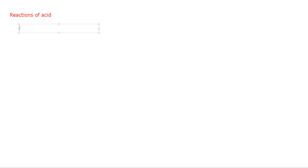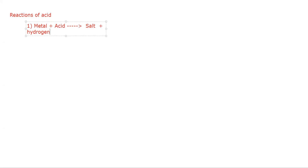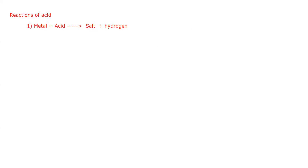Yesterday we started the reactions of acid. We did the first one: when you have a metal, it reacts with acid, and this results in a formation of salt and hydrogen. This was the first reaction we discussed yesterday. You should know the observation, the metals which react with this acid, the equation — word, symbolic, and ionic — and how to obtain this salt.